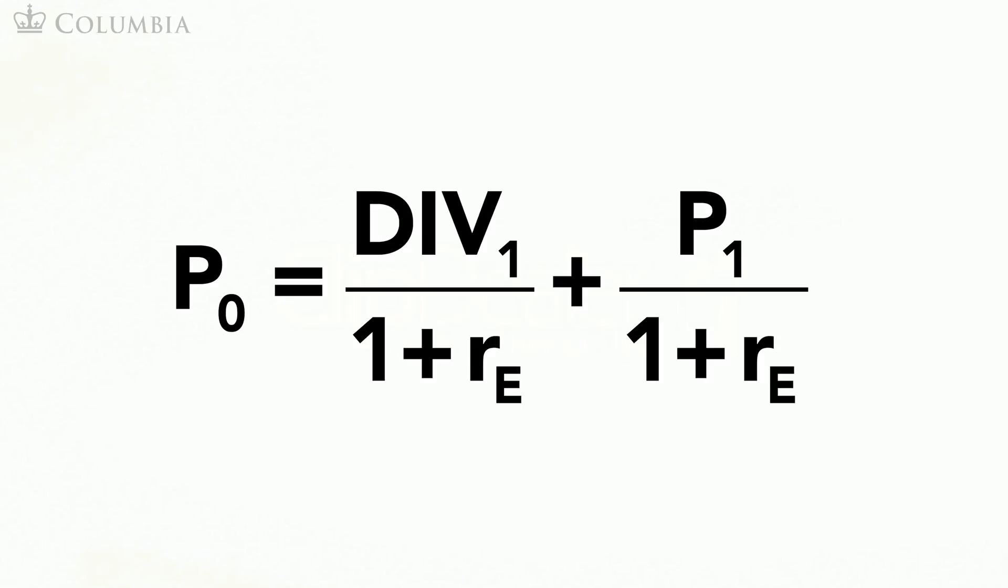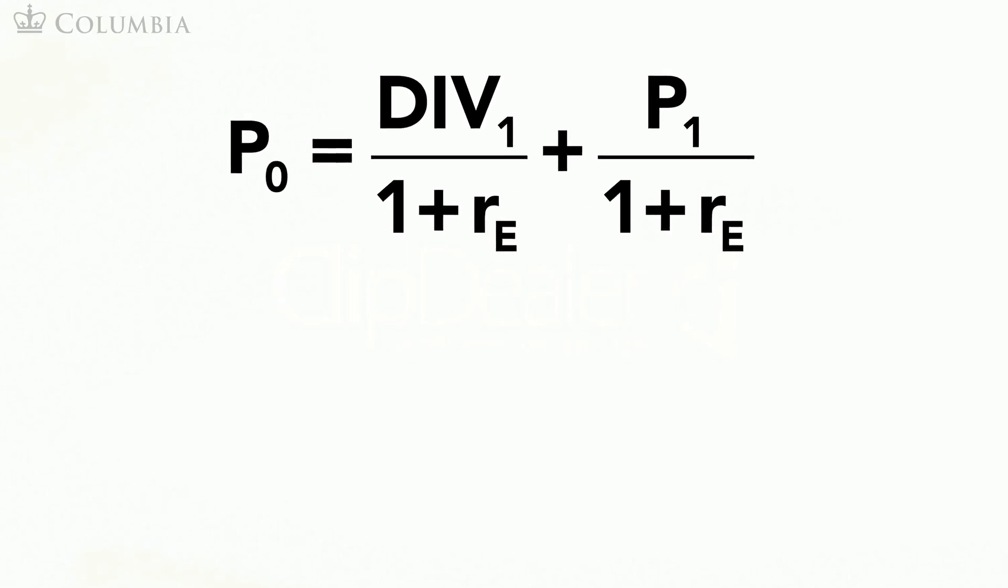Well then, let's find the price of the stock next year. To do this, assume you buy the stock in year 1, earn dividend DIV₂ in year 2, and sell the stock in year 2 for P₂. The formula for the price of the stock in year 1 is given here.